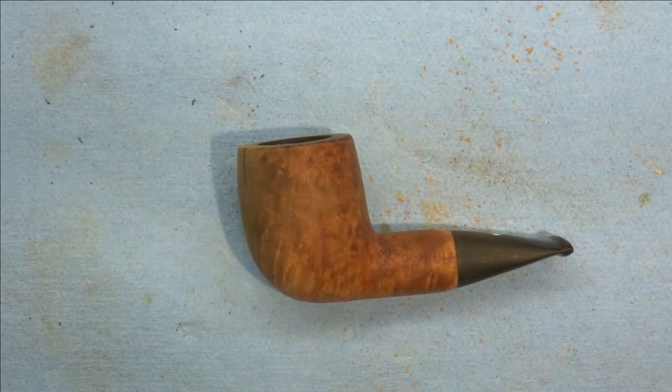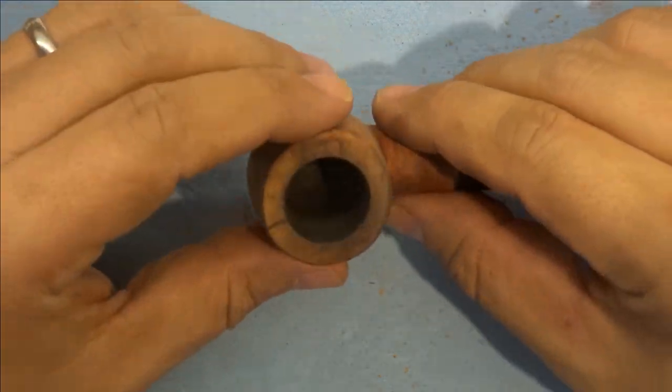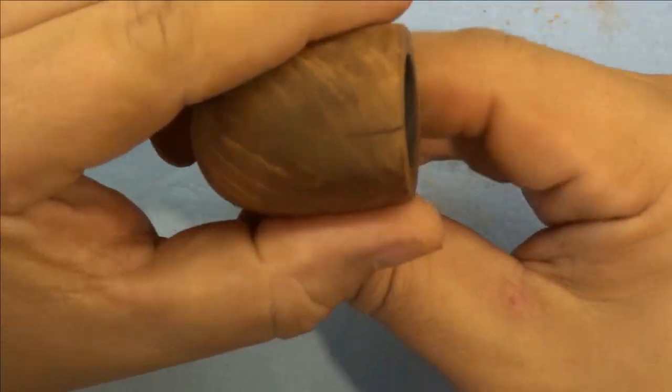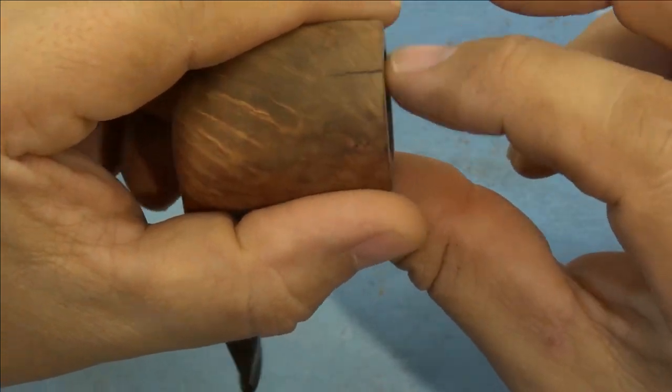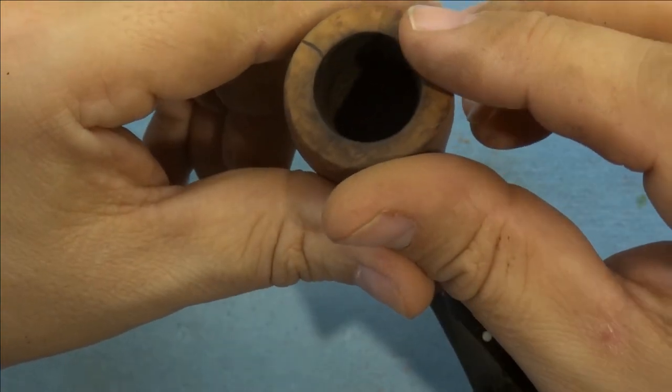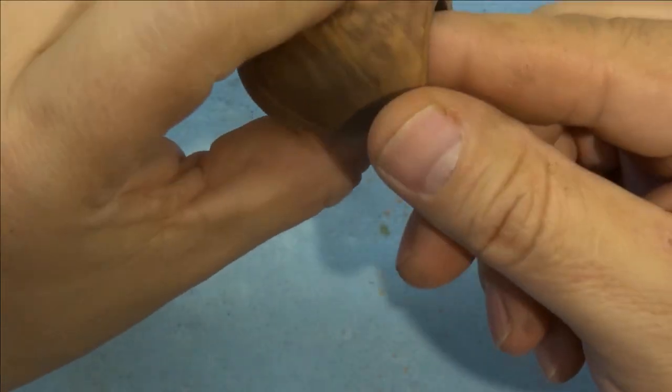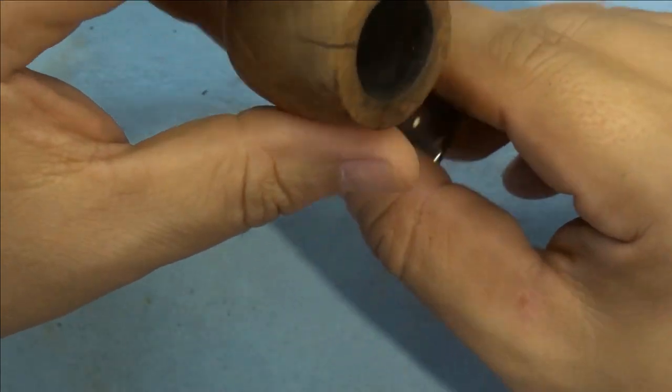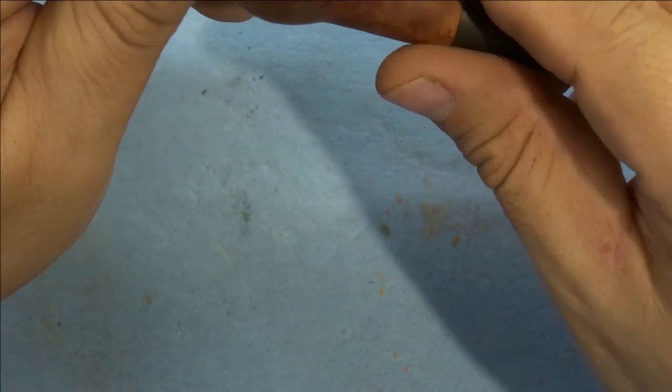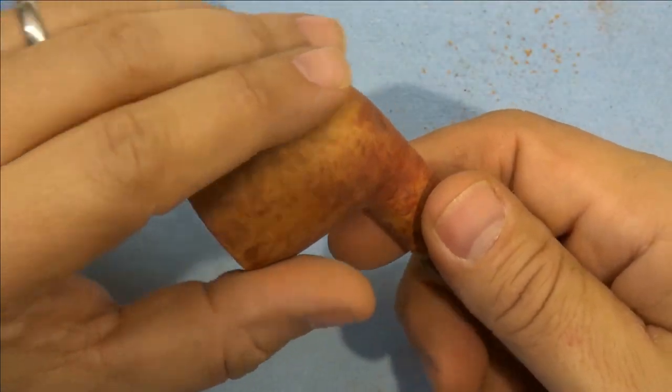After much sanding, we're ready to refinish. The crack is not invisible but completely smooth and filled, so this pipe should smoke fine for many years. The extra chin has been removed and feels more reasonable, and the stem now fits quite nicely.